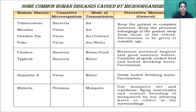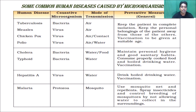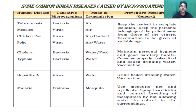Diseases transmitted through water are majorly bacterial. Cholera is caused by bacteria and transmitted through water or food. House flies sit on garbage and then on uncovered food, which can cause cholera. That is why we must eat properly cooked food and avoid uncovered food. Typhoid is also caused by bacteria and transmitted through water.